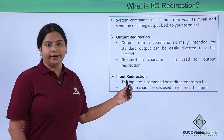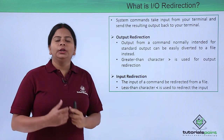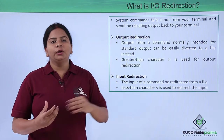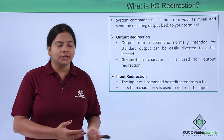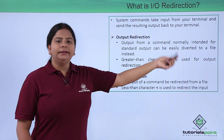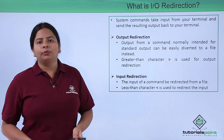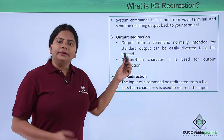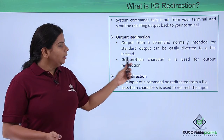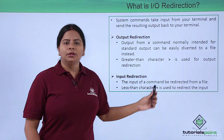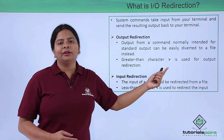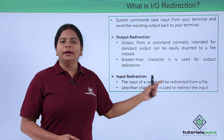Output redirection: once you have given a command and get the output, you can redirect that output into a different file or into different commands. The output from a command normally intended for standard output can be easily diverted to a file instead of displaying it on the prompt itself. To redirect the output into another file or command, we just need to use the greater-than sign. For example, I give a command and I want the output saved into a file — I use the greater-than sign after the command followed by the file name.